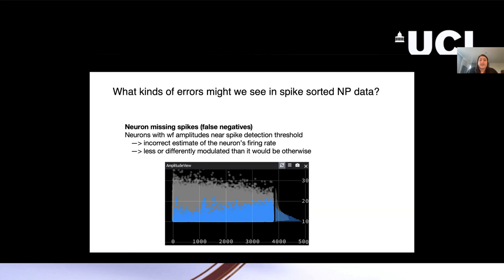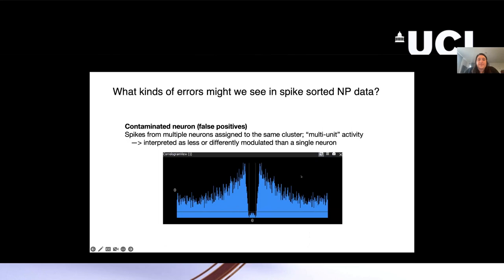For example, with false negatives, if you include a neuron like this where you're missing all of these presumably waveforms down here that are below the spike detection threshold, you'd get an incorrect estimate of the neuron's firing rate. So you'd conclude that the neuron is less or differently modulated than it would be otherwise by whatever your experimental variable is.